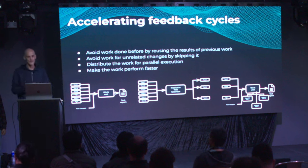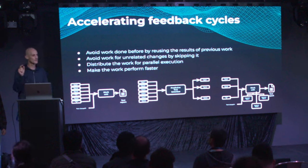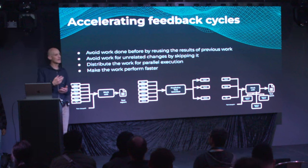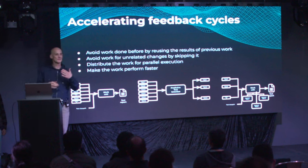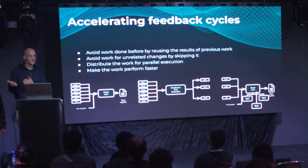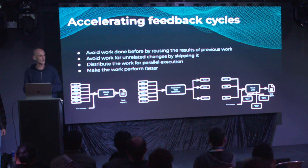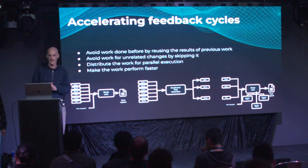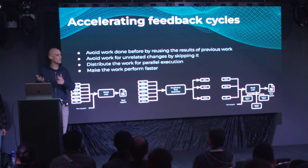To give one example each: a calculator won't calculate pi every time you press the pi button — it did it once, stored it, and now it's always reused. If you make a change to a CSS file, you don't need to rerun linting rules about Java. If you have slow Scala compilation, you could distribute it and get faster feedback cycles. And maybe Kotlin released a new compiler version that is faster — that's also a way to improve speed.